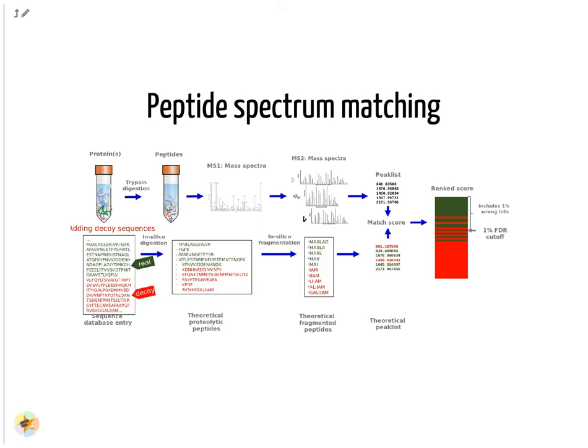Potentially false matches may occur, therefore the false positive rate is controlled. This is done by adding decoy sequences to the protein sequence database. These sequences are generated by reversing or shuffling the real sequences and will not exist in the sample. If such sequences are considered a good match to an MS2 spectrum, this is a false match. One option to control the number of false positive matches is via a false discovery cutoff that includes only the best matching scores with 1% wrong decoy matches.